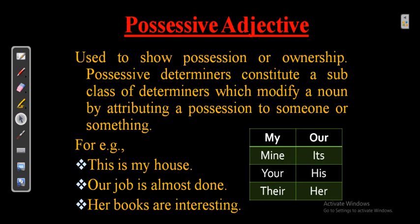Possessive adjective gives you the position or ownership. Possessive determiners constitute a subclass of determiners that modify a noun by attributing possession to someone or something. The eight possessive adjectives are: my, mine, you, your, her, his, its, our. For example: 'This is my house — I own this house.' 'Our job is almost done.' 'Our books are interesting.' These show ownership.